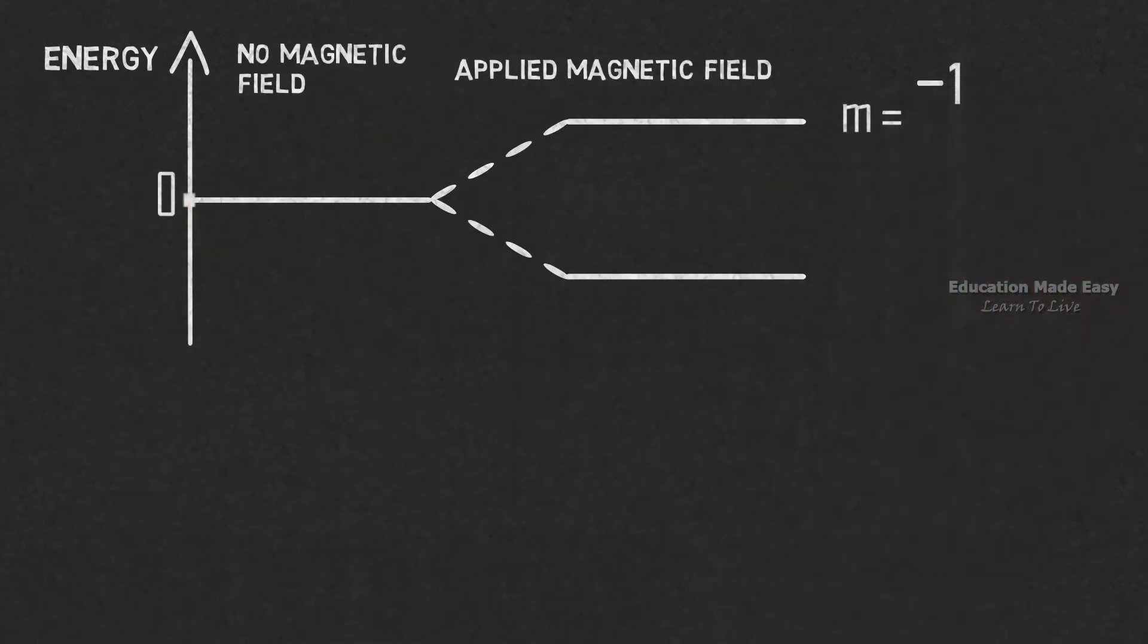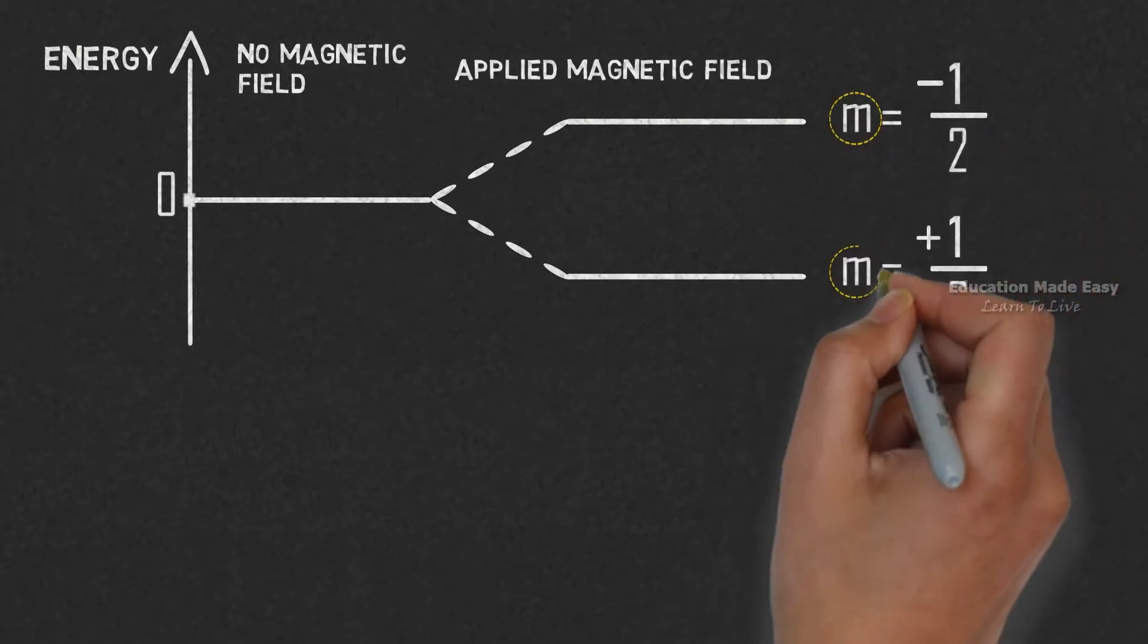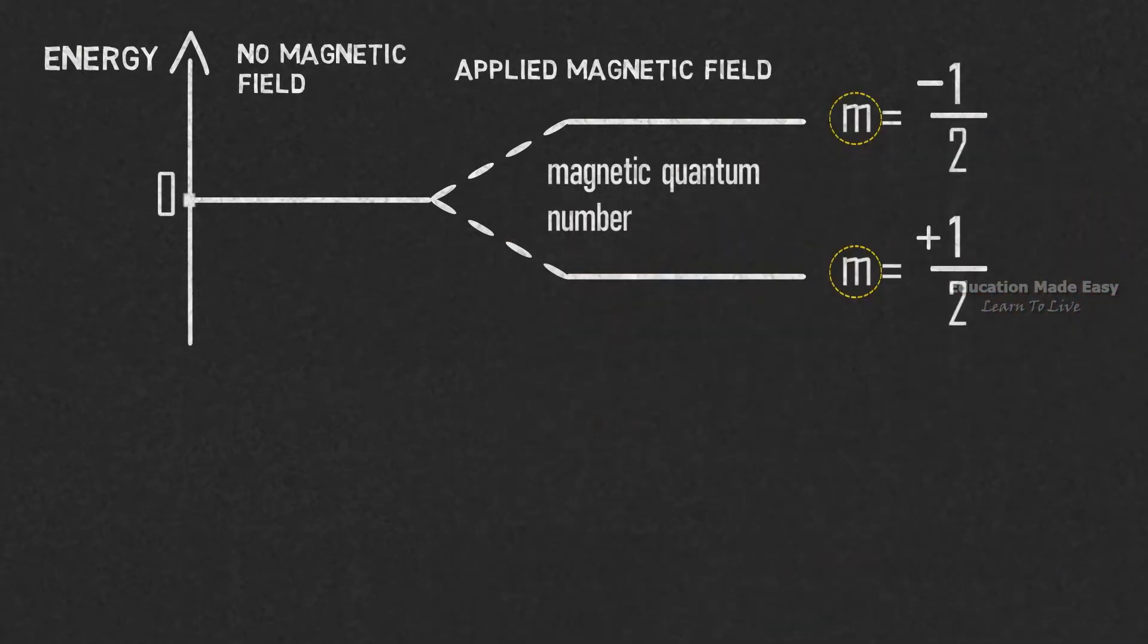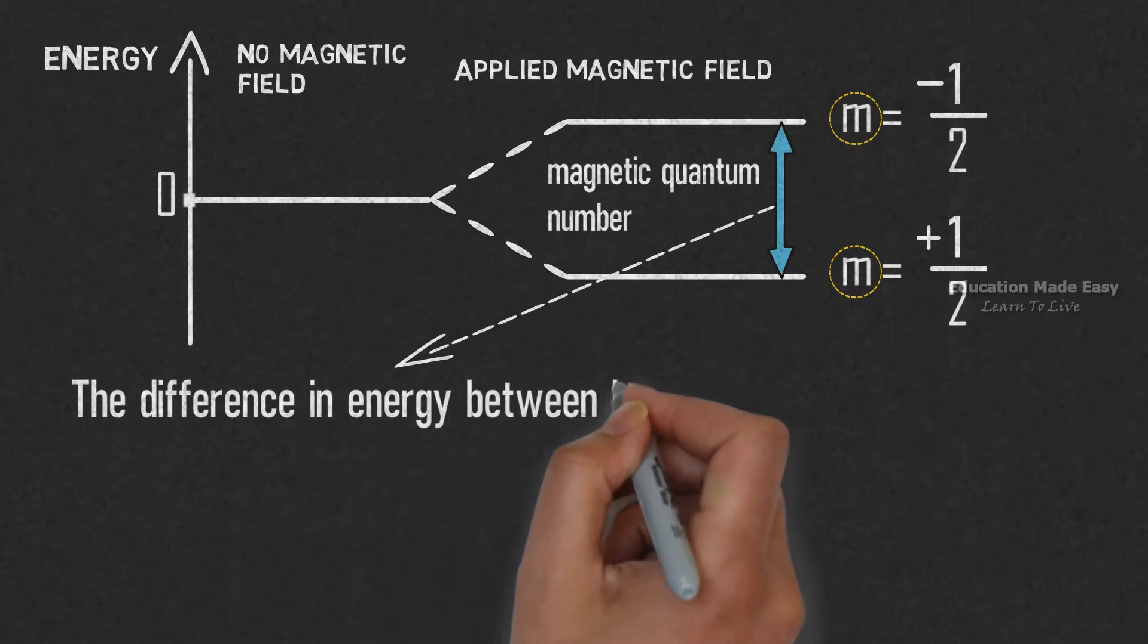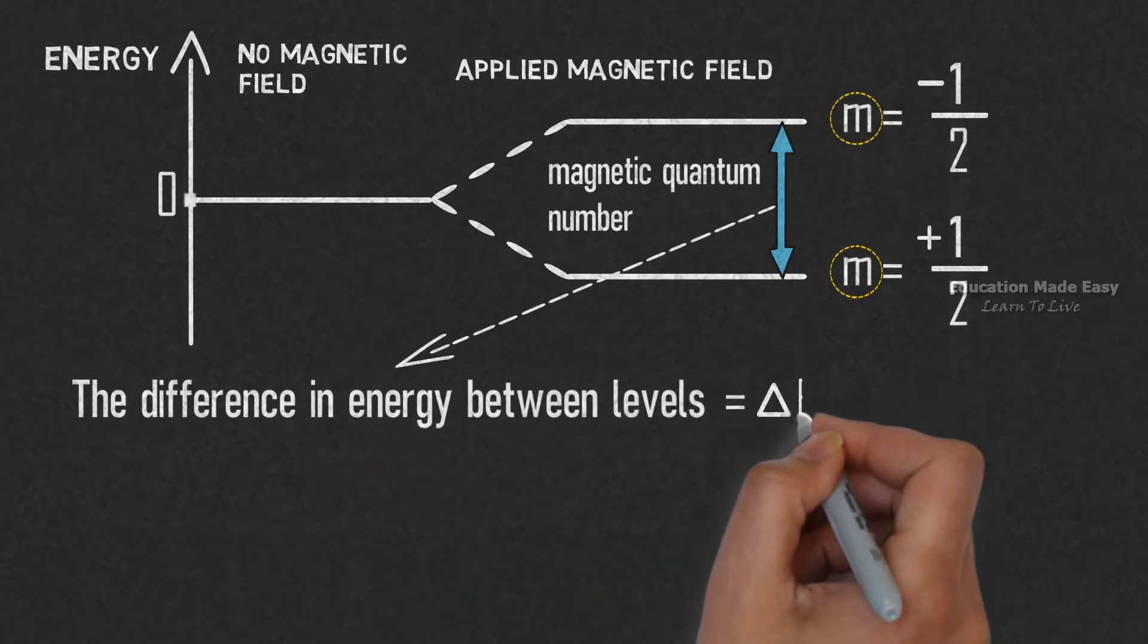Let us draw the energy levels of a nucleus with spin quantum number I equal to 1/2. Here we can see a difference in the energy between the two orientations. The difference in energy between the levels is equal to ΔE.